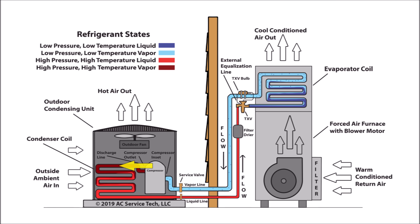The refrigerant enters the discharge tube, and it rejects heat and lowers in temperature. Then it travels into the condenser coil, and it continues to reject heat and lower in temperature until it turns into the saturated state. The saturated state is where liquid and vapor both exist at the same time. It's going to continue to reject heat, but it's not going to lower in temperature — it's going to maintain the same temperature as it gives off its heat energy, until it turns into a complete liquid.